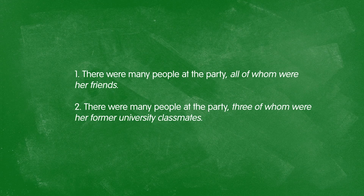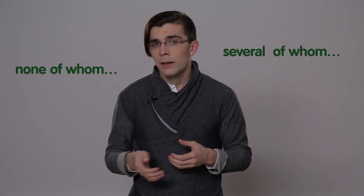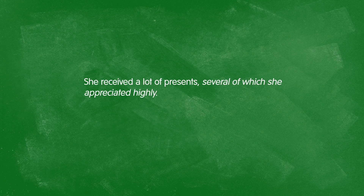We can use 'who,' 'which,' or 'whom' in expressions using 'of' to mean quantity. For example: there were many people at the party, all of whom were her friends — or three of whom were her former university classmates. Common quantity combinations include: all of whom, two to four of whom, several of whom, or none of whom. If we're speaking about inanimate objects, we simply replace 'who' or 'whom' with 'which' — for example: she received a lot of presents, several of which she appreciated highly.